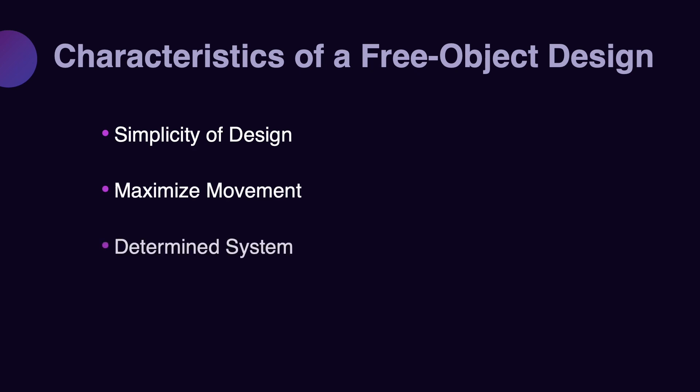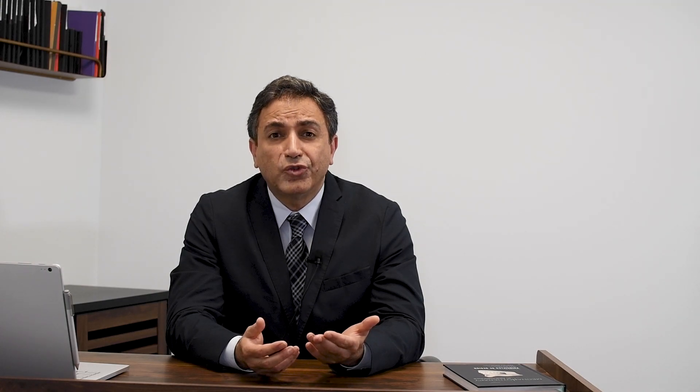The third characteristic of free object design is that the force and moments you apply on the target unit are defined. You don't apply a couple on the unit, but your force, depending on the line of action and the center of resistance of the target unit, produces a moment. By changing the point of application of the force, you can change the direction of the moment, and through that, you can define the type of movement.